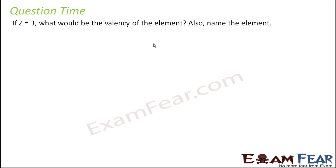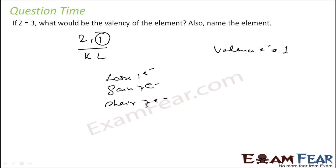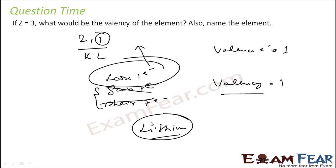If Z = 3, what would be the valency of the element? Z = 3 means the electronic configuration is 2, 1. The outermost shell has one electron — that is 1 valence electron. It either needs to lose one electron, or gain seven, or share seven — but gaining or sharing seven electrons is not possible, that's a huge number. So it will lose one electron and thus the valency is 1. This element is lithium — atomic number 3 is lithium.